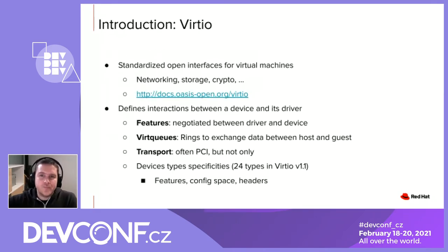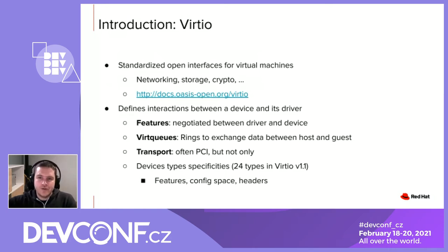Virtio is an open specification that standardizes different types of interfaces for virtual machines. It defines the layout of the device and all the interaction that happens between a device and its driver. First, Virtio has a notion of features which are negotiated between the device and the driver to enable backward compatibility. Features can either be generic to all device types, like features about ring layout or IOMMU support, or features can be specific to a device type — like in the case of a Virtio network device, the MTU feature.